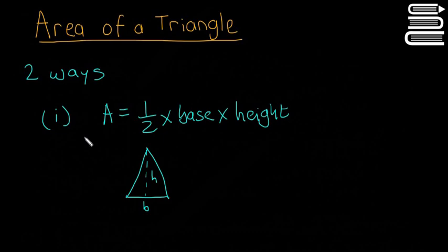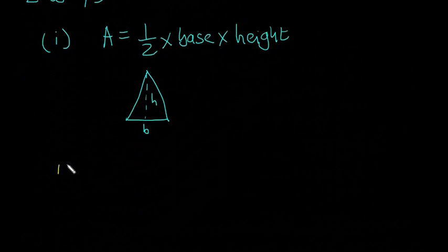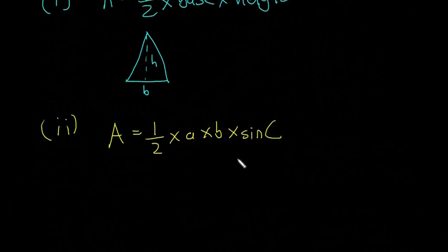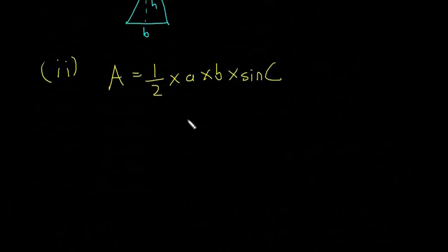The second way then would be, this might be new to some of you, so you probably would have seen this in the junior search, but this one is a little bit of a new way. It's A is equal to half multiplied by A multiplied by B multiplied by sine of C. And obviously that doesn't mean anything until we see what AB and sine C are.